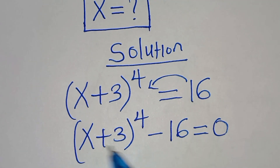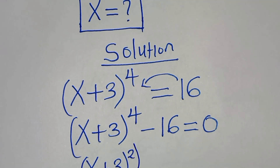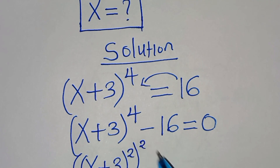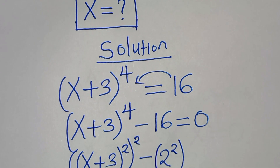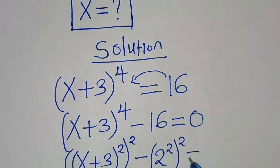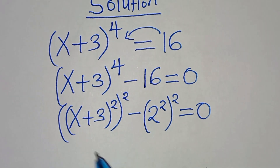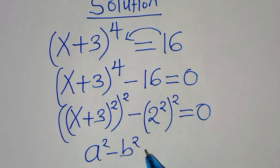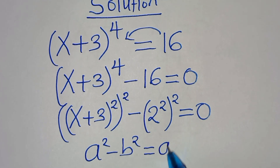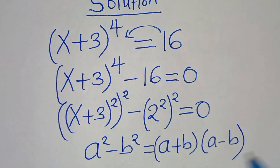We can express x plus 3 to the power of 4 as x plus 3 raised to the power of 2, then raised to the power of 2, minus 16 expressed as 2 to the power of 2, then raised to the power of 2, equals 0. This equation is of the form a squared minus b squared — the difference of two perfect squares — which we can express as a plus b, multiplying by a subtract b.